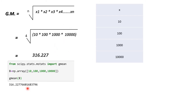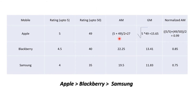Now let's see a use case. We have three mobiles: Apple, Blackberry, and Samsung, with ratings out of 5. Apple has 5/5, Blackberry has 4.5/5, and Samsung has 4/5. The second values are 49, 40, and 35. The arithmetic mean is calculated as: (5 + 49) / 2 = 27, (4.5 + 40) / 2 = 22.25, and (4 + 35) / 2 = 19.5.